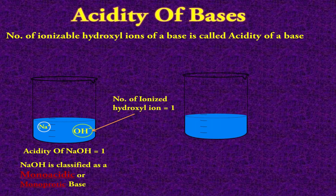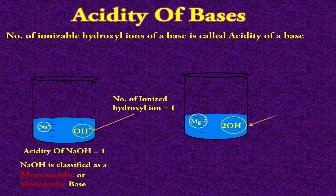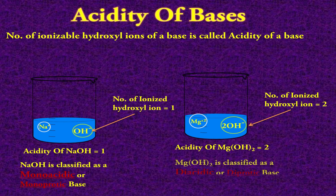Let's see another example: magnesium hydroxide, Mg(OH)₂. There are two OH ions in the formula of magnesium hydroxide. When it dissolves in water, it produces Mg²⁺ ions and 2 hydroxyl ions. Here the number of ionized hydroxyl ions is 2, therefore the acidity of magnesium hydroxide is 2, and it is classified as a diacidic or diprotic base.